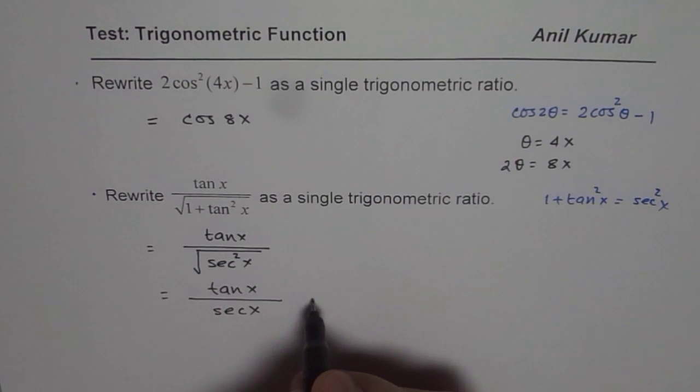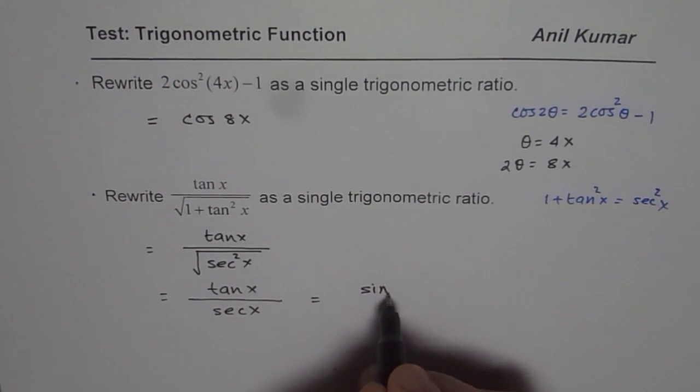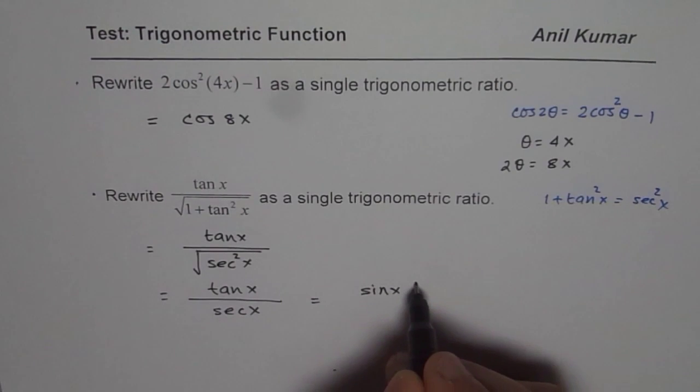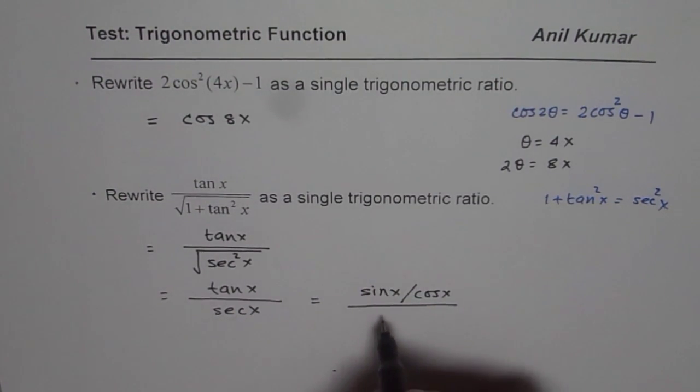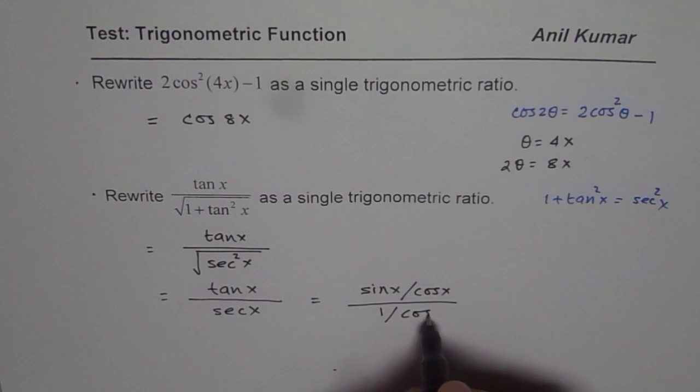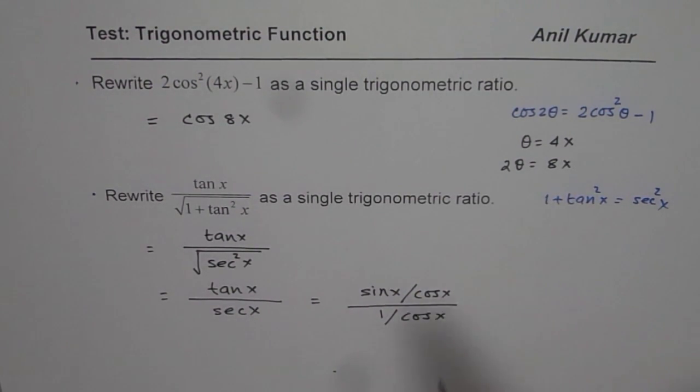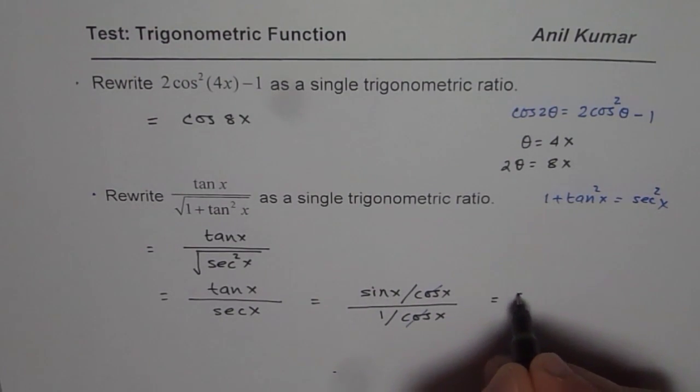Now, tan x can be written as sin x over cos x. And sec x is 1 over cos x. Now, cos x and cos x cancel out, right? So we are left with sin x.